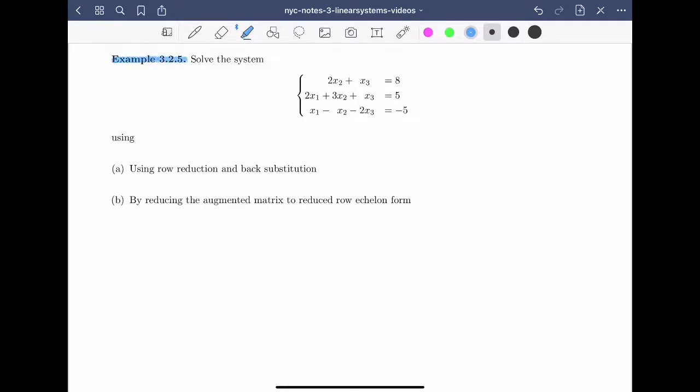Let's look at an example. Solve the linear system: 2x2 plus x3 equals 8, 2x1 plus 3x2 plus x3 equals 5, and x1 minus x2 minus 2x3 equals minus 5.